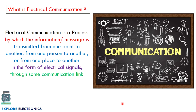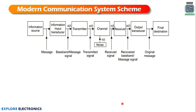The components of electrical communication make up the modern communication system scheme. It has an information source, which contains a message to communicate — this message can be audio, speech, text, image, or video. We need to transmit this message to a destination. This message is a physical quantity, and we convert it into an electrical quantity using an input transducer. The transducer converts a physical quantity like audio into an electrical signal, which is called the baseband signal — remember this word, baseband. The baseband signal is the actual message in electrical form.